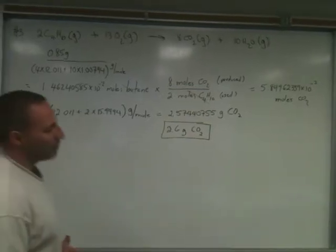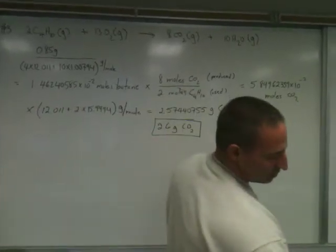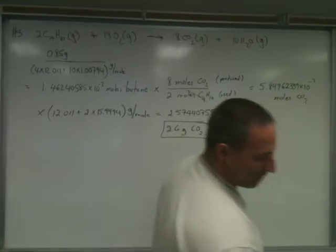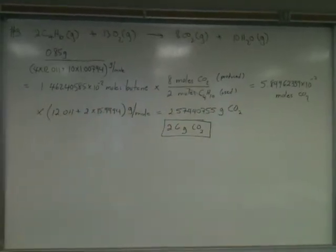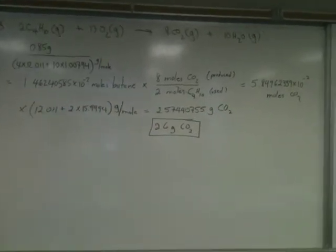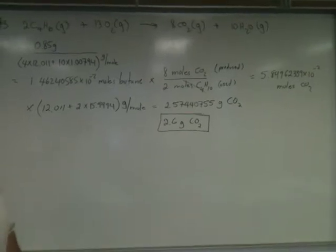So we have here a combustion equation. This is question number three in our sheet. Determine the mass of carbon dioxide produced when 0.85 grams of butane reacts with oxygen according to the following equation.